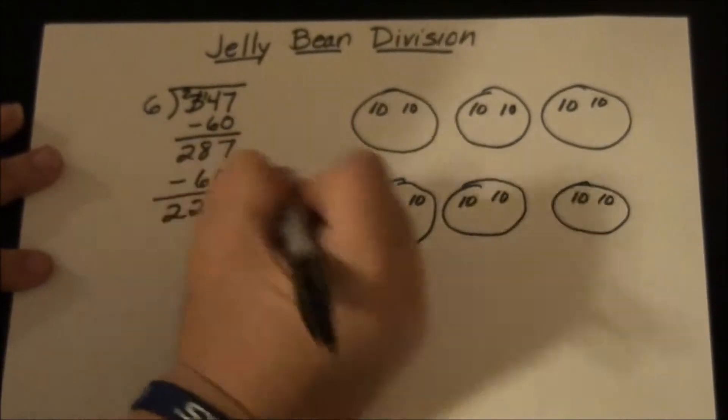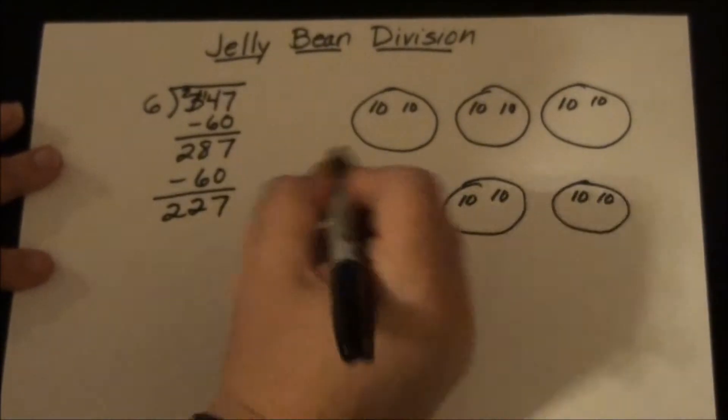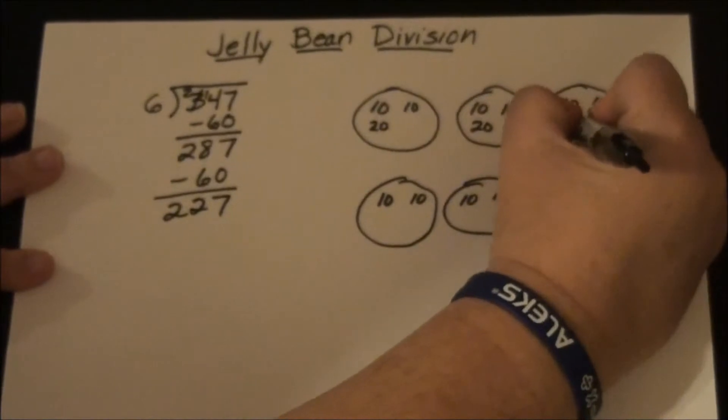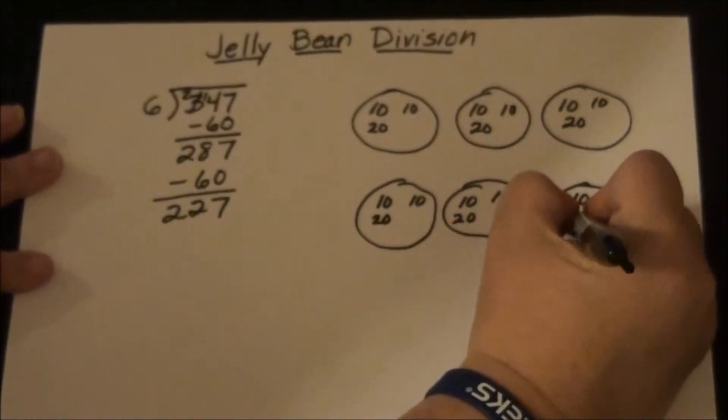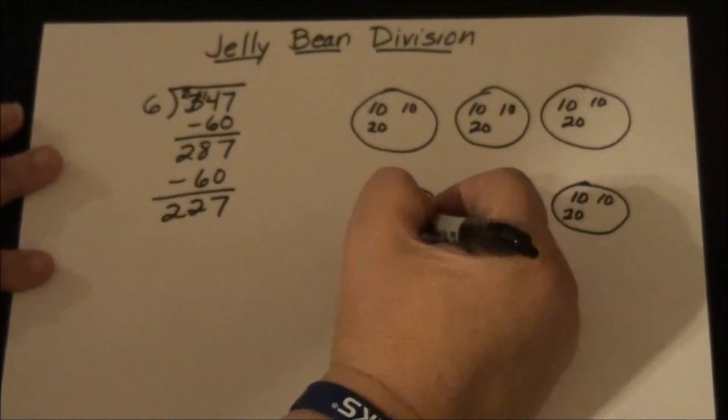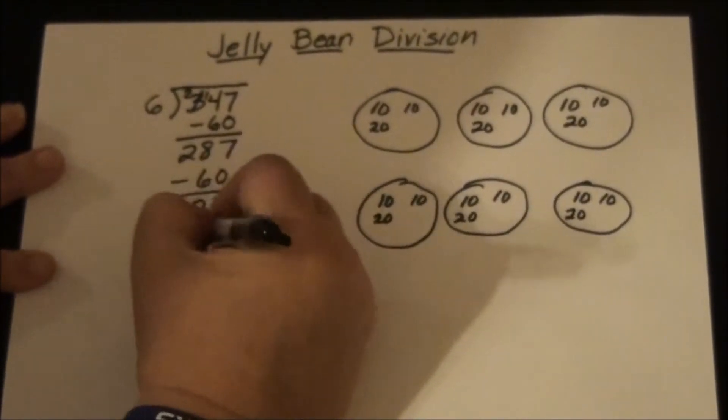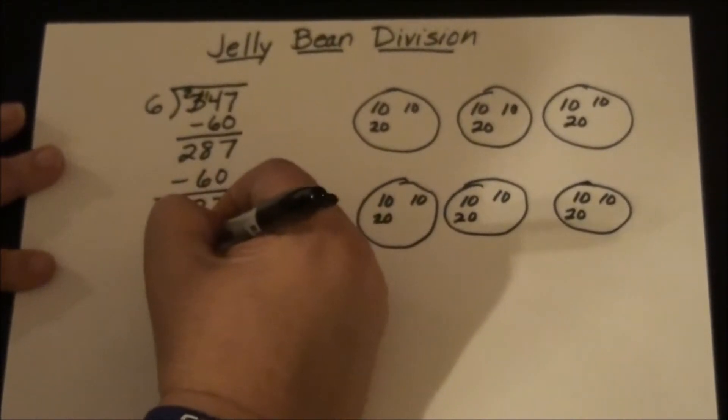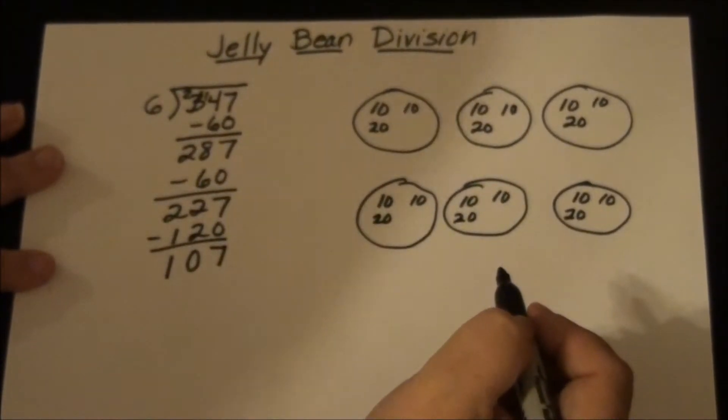So now I realize I'm not getting there very fast and I don't want to take all this time, so I'm going to try doing 20 in each bowl. So they have 20, 40, 60, 80, 100, 120. That got me there a lot faster, and they'll start to learn this as they go. 7 minus 0 is 7, 2 minus 2 is 0, 2 minus 1 is 1. So there's 107.